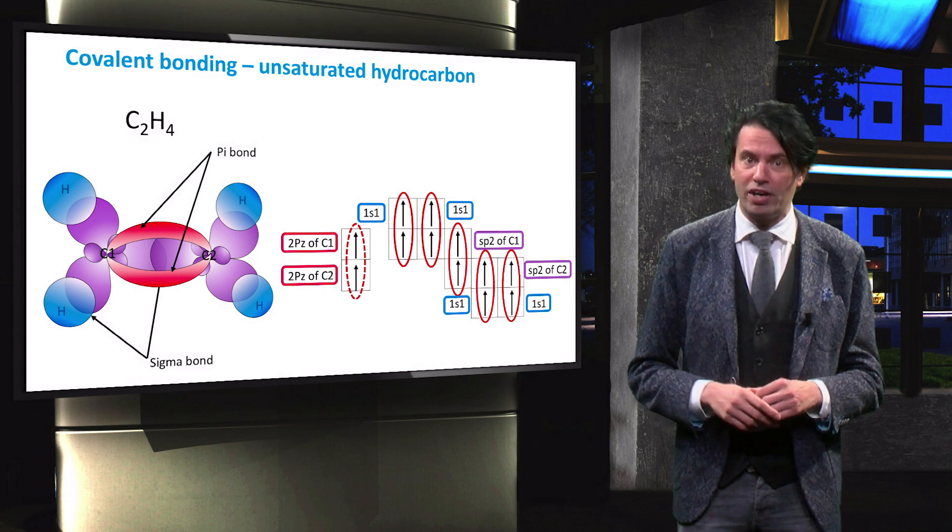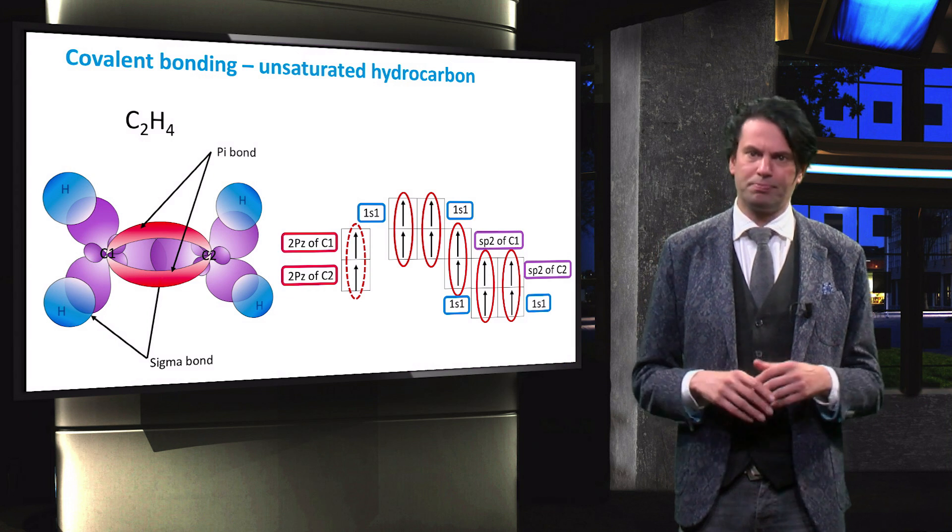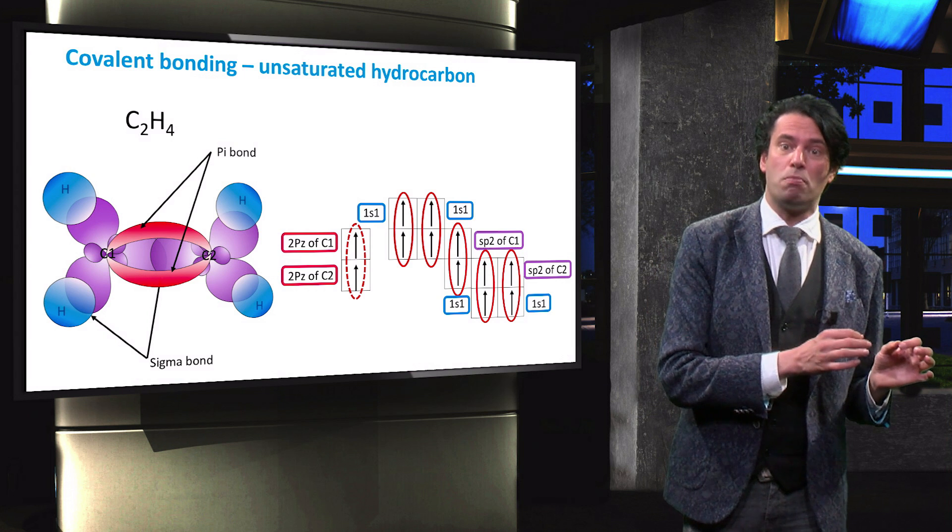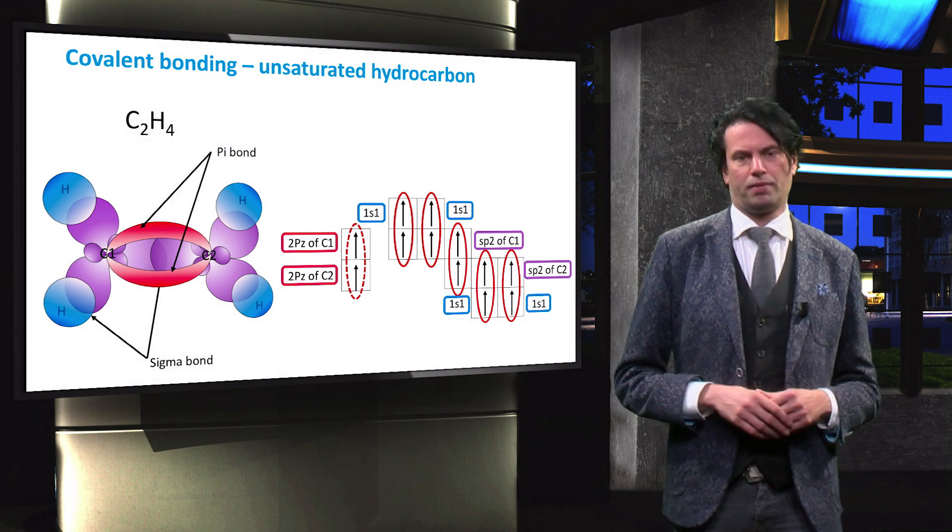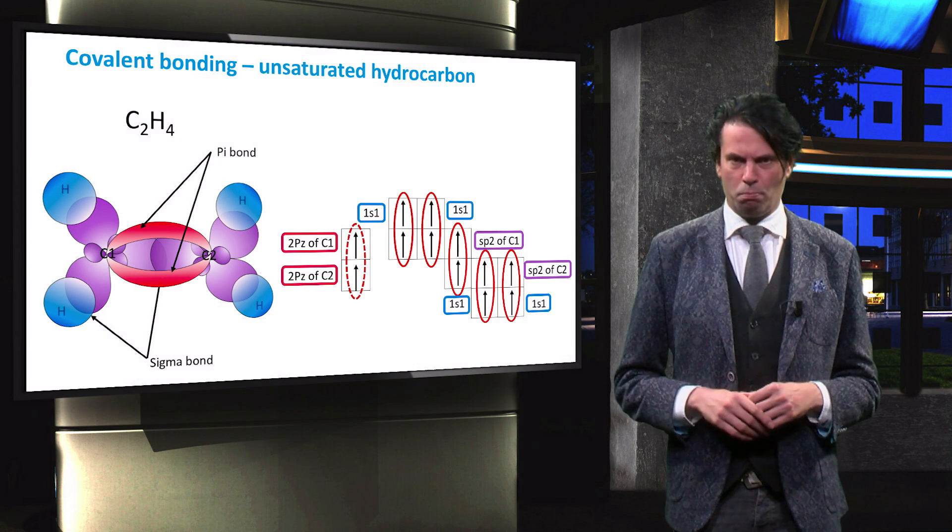This results in a continuous pi bond formation between neighboring carbon atoms throughout the chain, resulting in a network of interlinked p orbitals that can share their electrons. This allows the movement of electrons from one end of the molecule to the other. This is how charge carrier transport occurs in organic molecules.